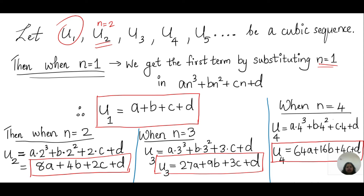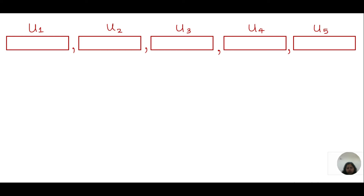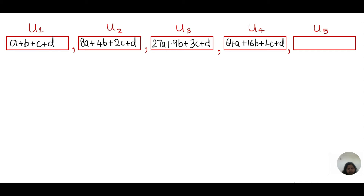So now I have found the first four terms in terms of a, b, c, and d. The full list of terms is: u1 = a plus b plus c plus t; u2 = 8a plus 4b plus 2c plus t; u3 = 27a plus 9b plus 3c plus t; u4 = 64a plus 16b plus 4c plus t. I also found the fifth term by substituting n equals 5, giving u5 equals 125a plus 25b plus 5c plus t.